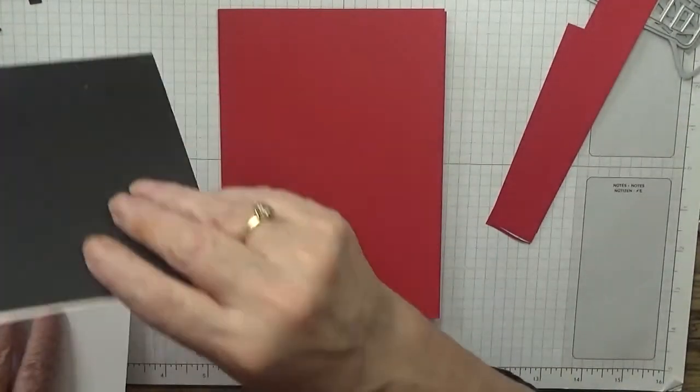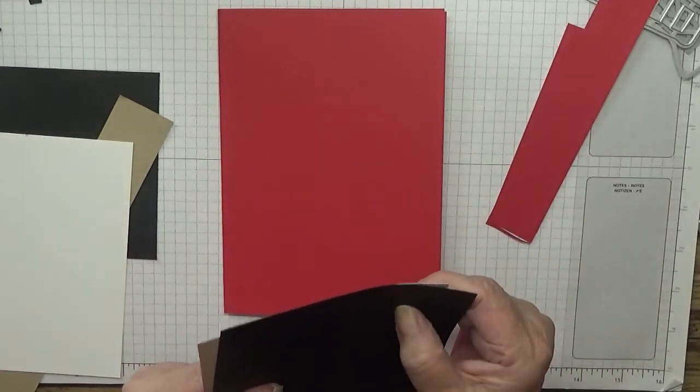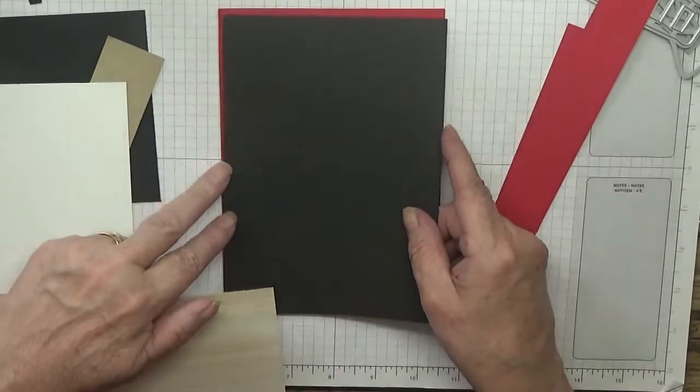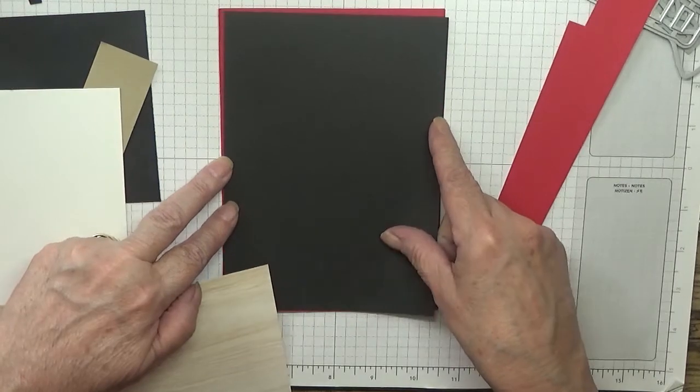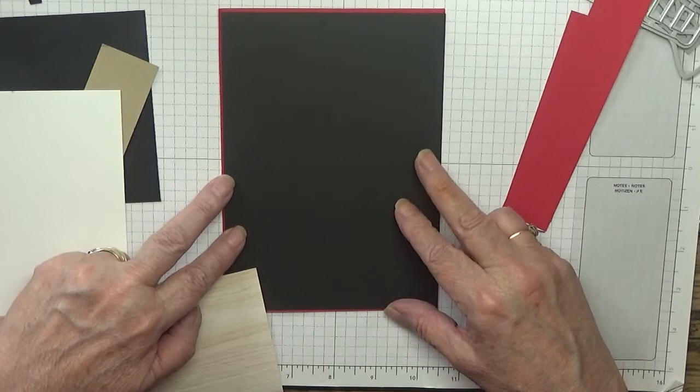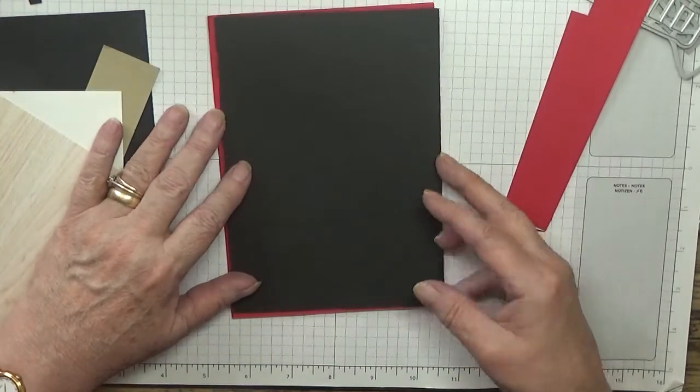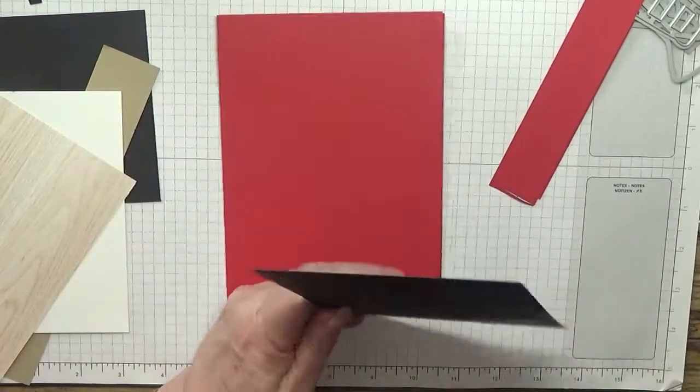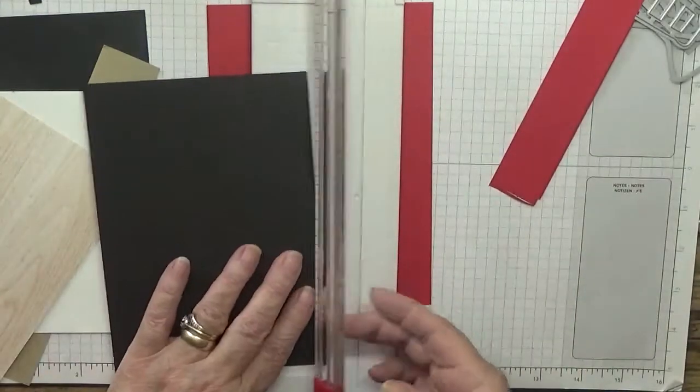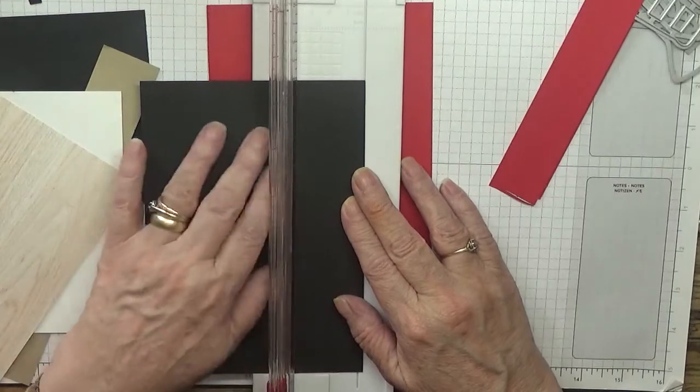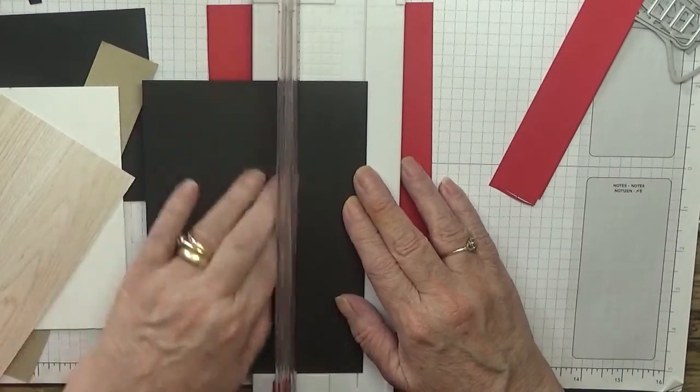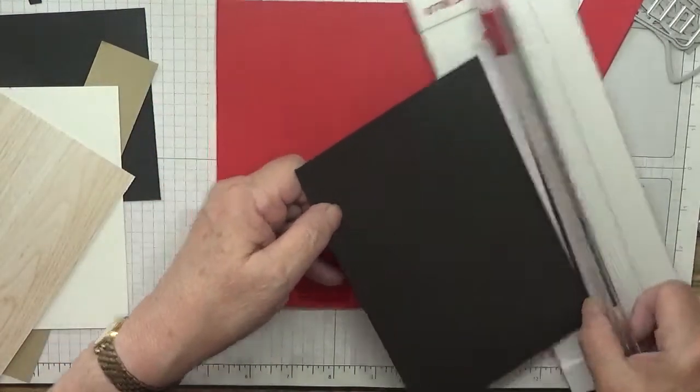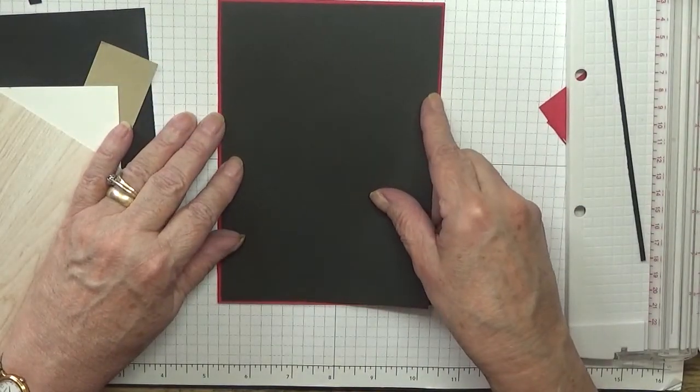I've got a piece of basic black that should be 4 and 7/8 by 6 and 7/8. But it's too wide, so I need to trim a little bit off. That's better.